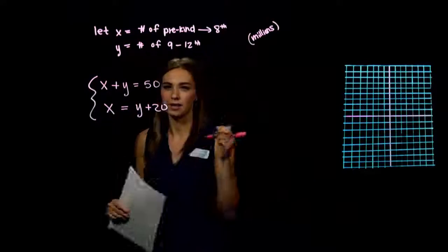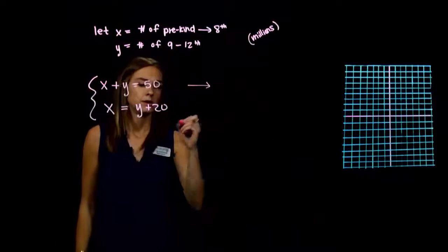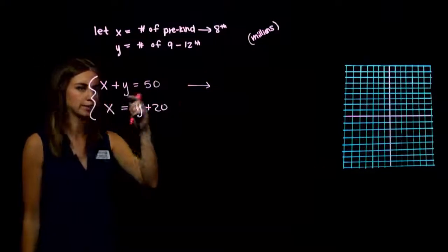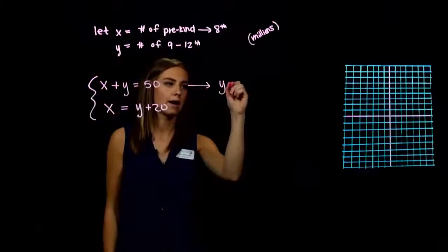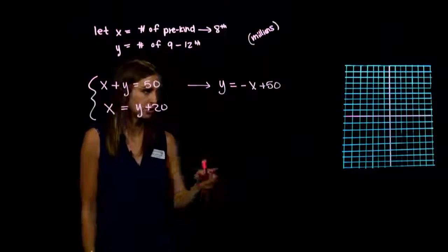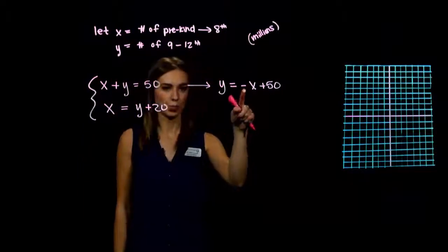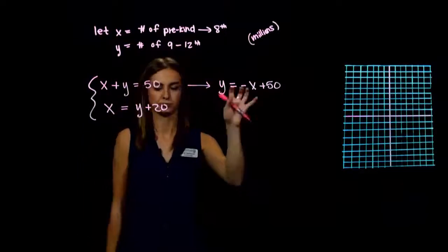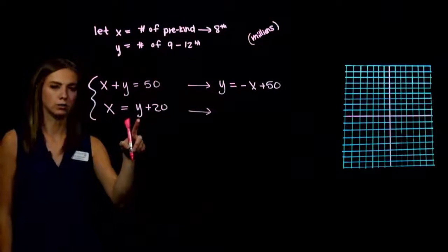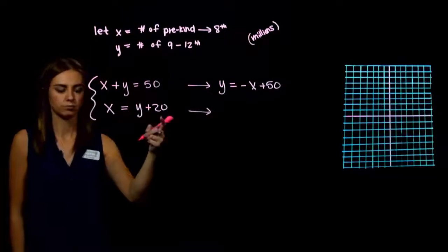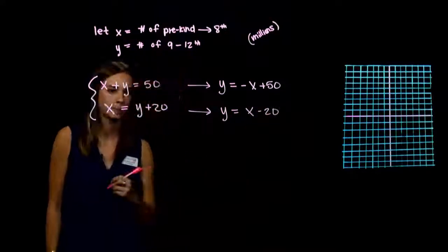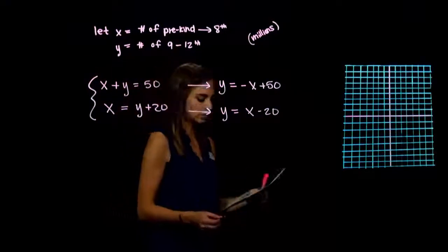For equation 1, to get y alone we subtract x from both sides, giving y equals negative x plus 50. The y-intercept is at 50 and the slope is negative 1 over 1. For equation 2, we subtract 20 from both sides, giving y equals x minus 20. When a term moves over the equal sign, the sign changes.